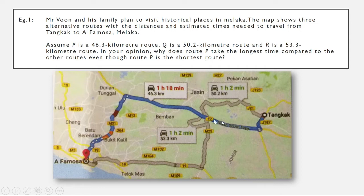We can see from the route, colored in blue and partly in red. Red means there are traffic jams. Why do we have traffic jams? Because there are more cars on the road. That's why route P is a crowded road — more cars on the road cause the traffic jams, and that's why route P takes the longest time compared to the rest.